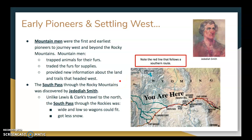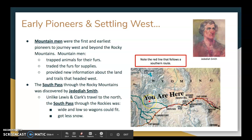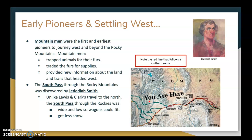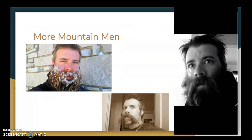The south pass through the Rocky Mountains was discovered by a fellow named Jedediah Smith. Unlike Lewis and Clark's travel to the north, the south pass through the Rockies was wide and low so wagons could fit, and it got less snow — definitely more attractive for people trying to get out west. The red line here shows the southern route. You might typically think of mountain men as dirty and unwashed, but there are pictures of some mountain men here that prove they could be very handsome — even with ice and snow in one man's beard.